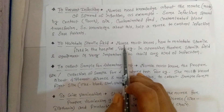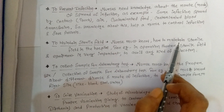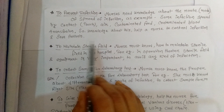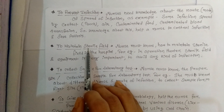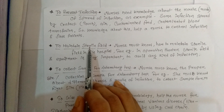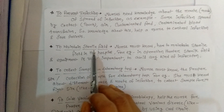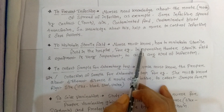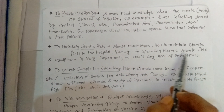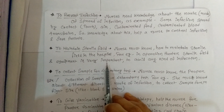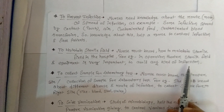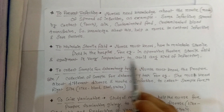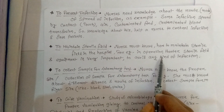The second point is to maintain sterile field. A nurse must know how to maintain a sterile field in the hospital. Sterilization means killing, removing, and deactivating all forms of life. In an operation theater, a sterile field and sterile equipment are very important to avoid any kind of infection during surgery, so we have to maintain the sterilization process and sterilize our equipment.